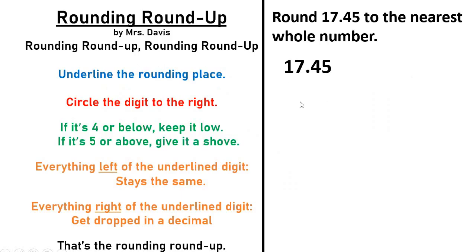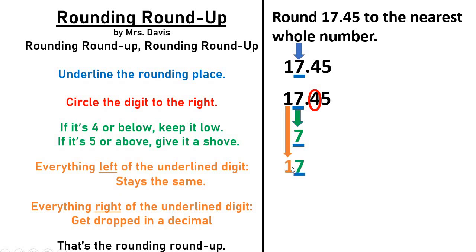Let's go ahead and try that with the Rounding Roundup song. Same exact problem: seventeen and forty-five hundredths rounded to the nearest whole number. So we underline the rounding place — whole number is the ones place. Circle the digit to the right, which is that four in the tenths place. Remember, it's the circled digit we use. If it's four or below, keep it low — and that's what it is. If it was five or above, we would have given it a shove up to eight. But in this case it's staying the same number. Everything left of the underlined digit stays the same. Everything right of the underlined digit gets dropped in a decimal. That's the rounding roundup.